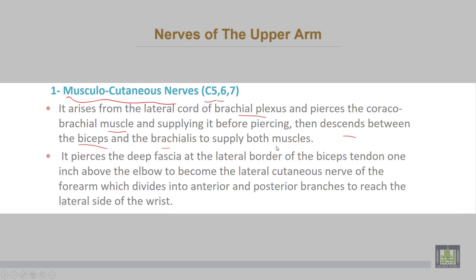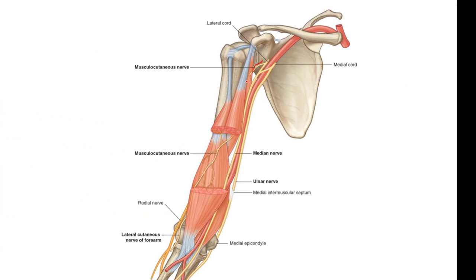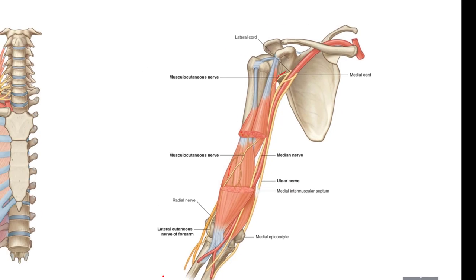It pierces the deep fascia at the lateral border of the biceps tendon, one inch above the elbow joint, to become the lateral cutaneous nerve of the forearm, which divides into anterior and posterior branches to reach the lateral side of the wrist. The musculocutaneous nerve pierces the coracobrachialis, passes between biceps and brachialis, and appears at the lateral border of the brachialis above the elbow joint to become the lateral cutaneous nerve of the forearm.